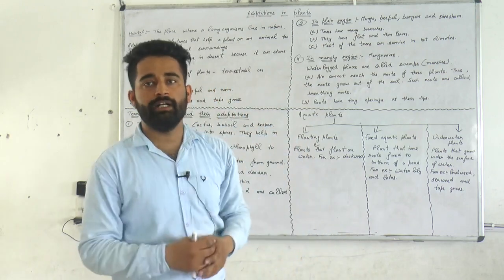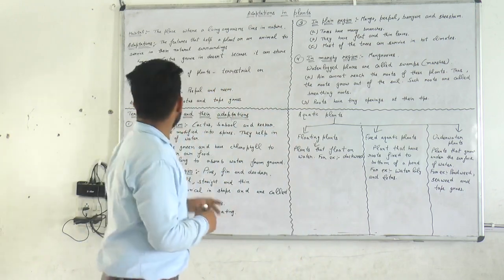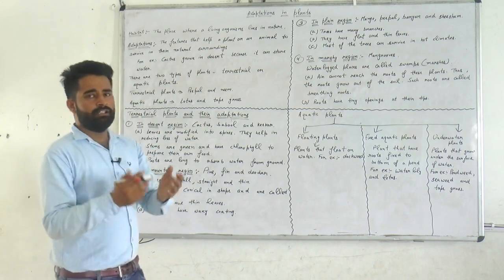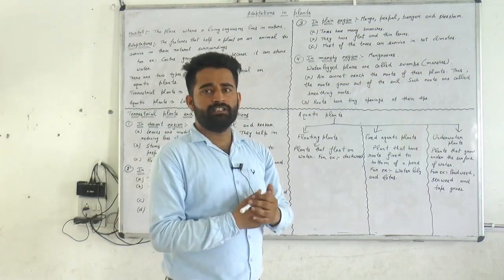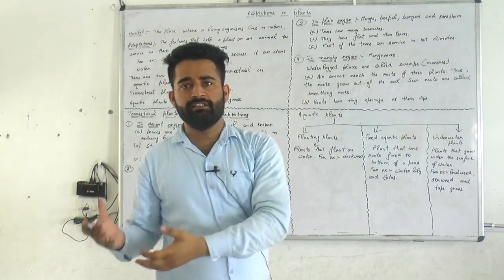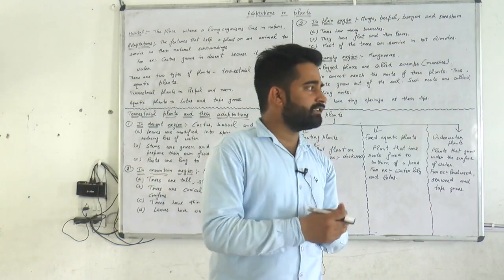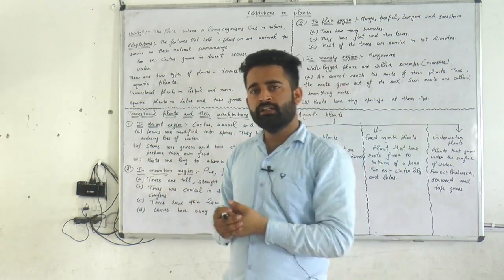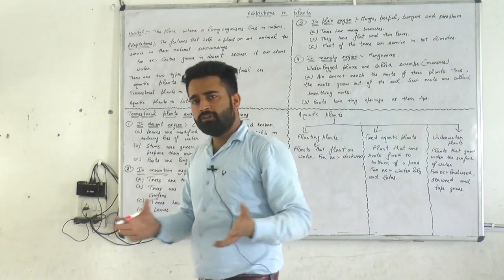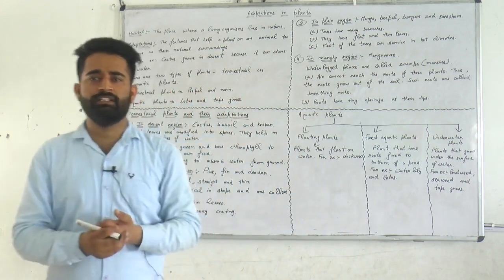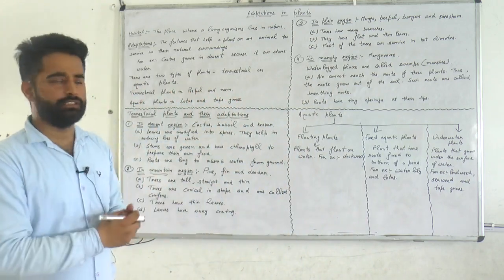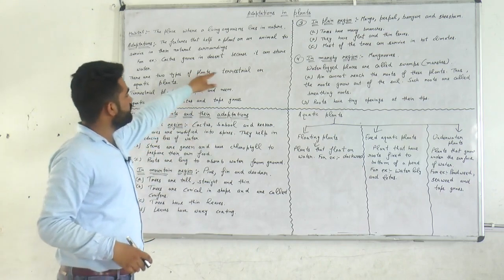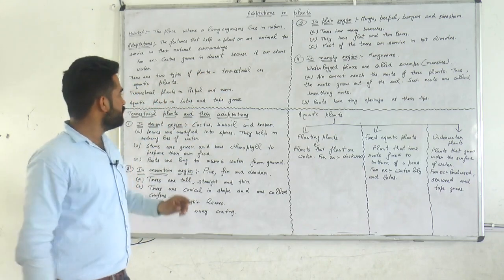There are many plants — in mountain regions different types of plants are there, in desert regions different types, and in marshy regions different kinds. We will discuss mainly two types of plants: terrestrial plants and aquatic plants.